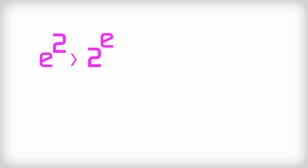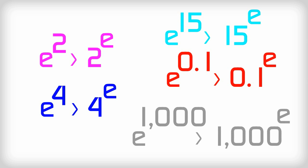Get out a calculator and notice that E to the power of 2 is greater than 2 to the power of E. Probably because E is greater than 2. But E to the power of 4 is also greater than 4 to the power of E. In fact, take any positive number except E itself — E to the power of that number is always greater than the number to the power of E. No other number does that.